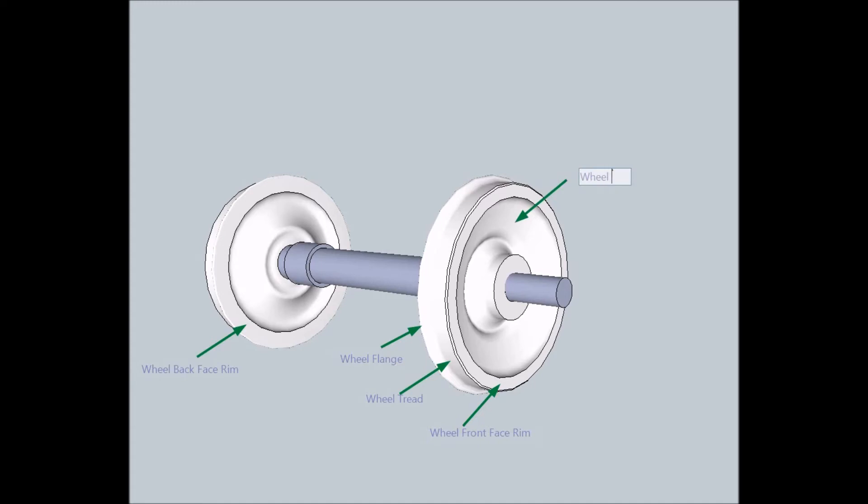That's the fifth component of wheel, it is wheel plate or wheel web that support wheel flange and tread also the wheel front face rim and wheel back face rim.